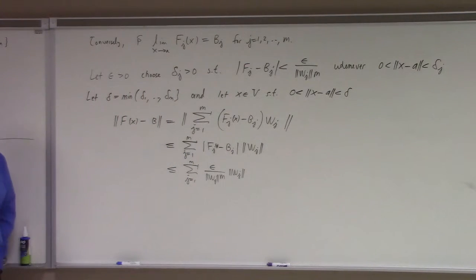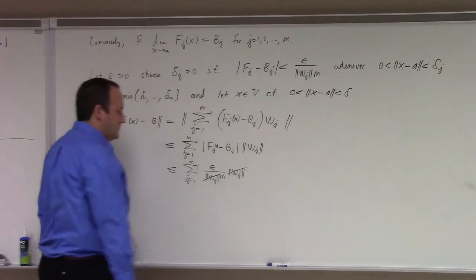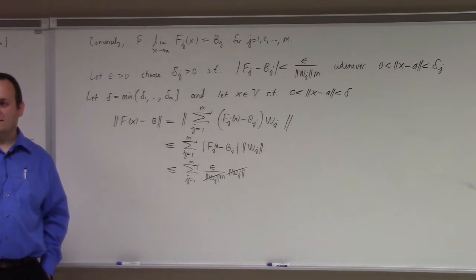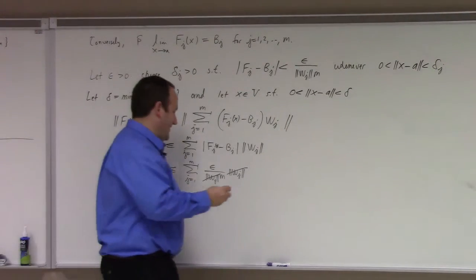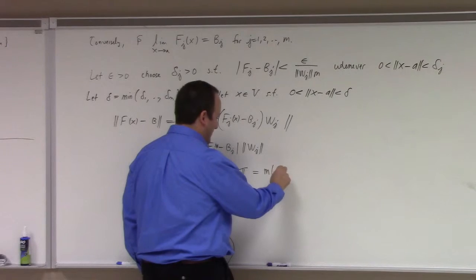You can see why I was almost chickening out and coming up with a symbol for the norm of wj, but I have to admit it kind of needs to be there conceptually to see what's going on. So these cancel. And epsilon is just a constant. What happens when you add a constant? Epsilon over m is a constant. What happens when you add it m times? Epsilon over m times what? Multiply by m, right? So it's m times epsilon over m.